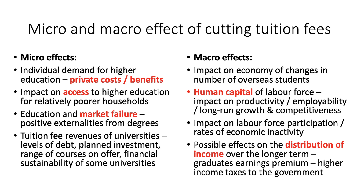A fee cut could also impact at the micro level on access to higher education for relatively poorer households. Another avenue on the micro side is to think about the market failures associated with education and degrees — in particular, debate and analyse the extent of positive externalities from taking different types of degree, where social benefits exceed private benefits. Microeconomics could also focus on individual universities: what revenues they generate, what courses they can offer, and how many student places they can provide. The financial sustainability of some universities has been called into question, particularly those who've borrowed heavily to expand facilities and accommodation but have seen a fall in student numbers.